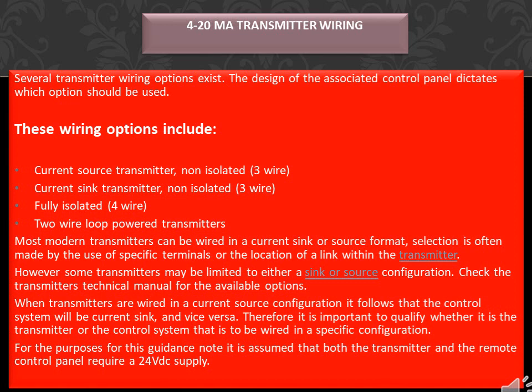However, some transmitters may be limited to either a sink or source configuration. Check the transmitter's technical manual for the available options. When transmitters are wired in a current source configuration, it follows that the control system will be current sink, and vice versa. Therefore it is important to qualify whether it is the transmitter or the control system that is to be wired in a specific configuration. For the purposes of this guidance note, it is assumed that both the transmitter and the remote control panel require a 24VDC supply.